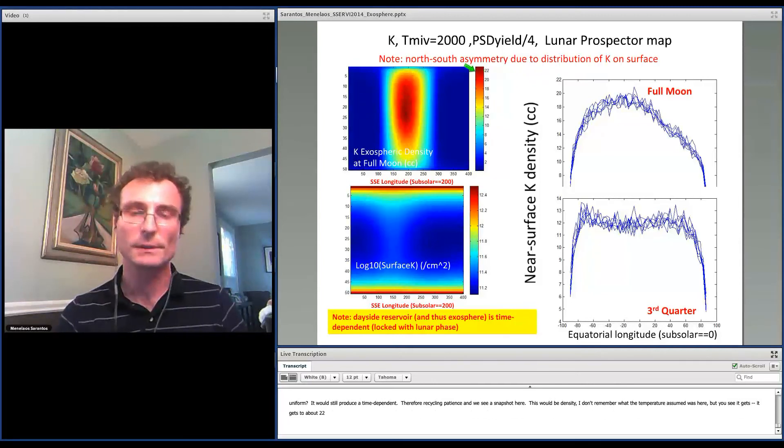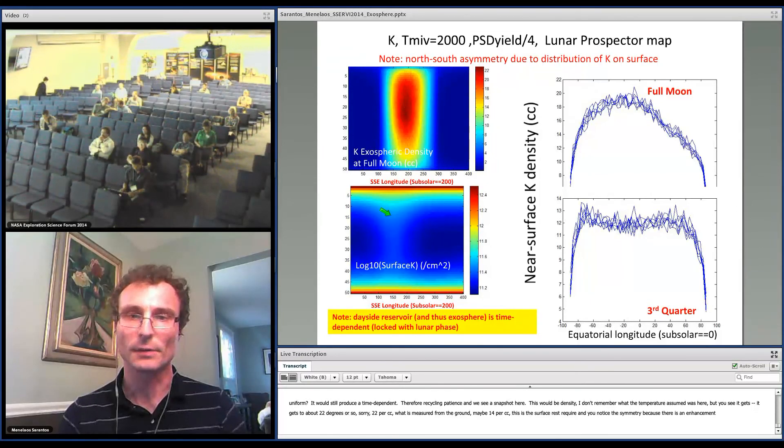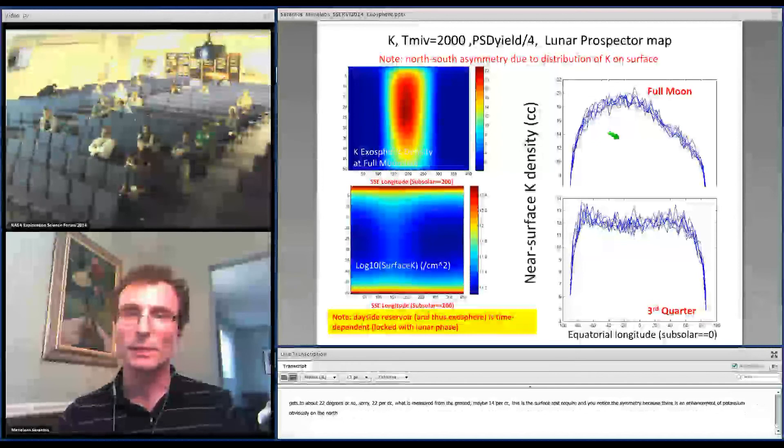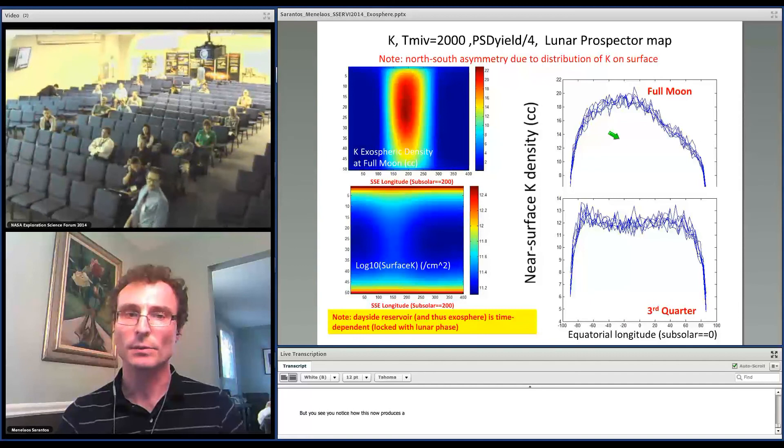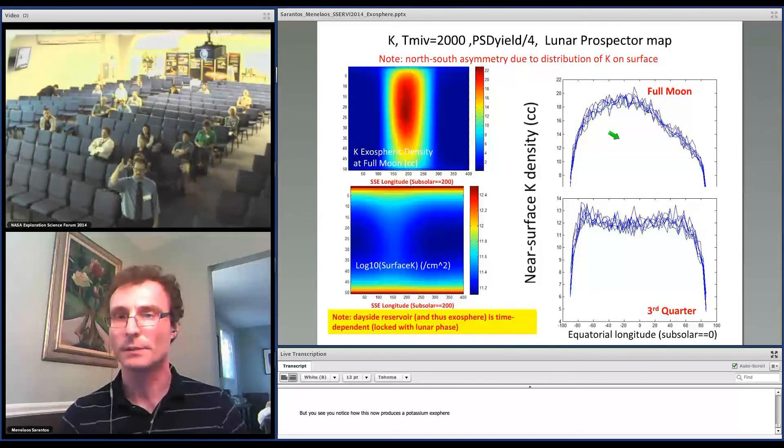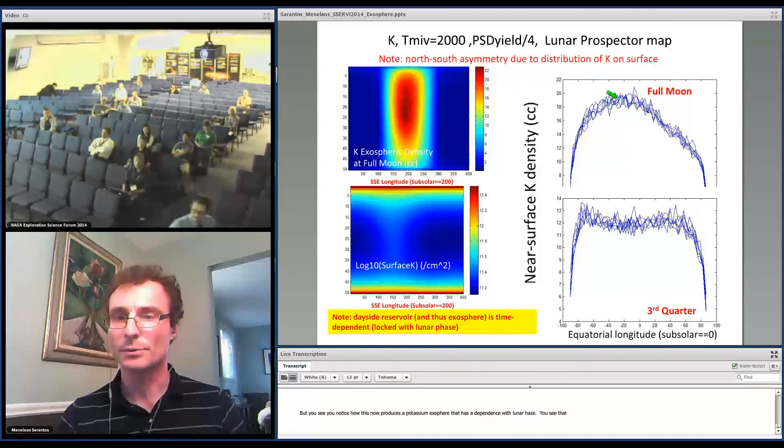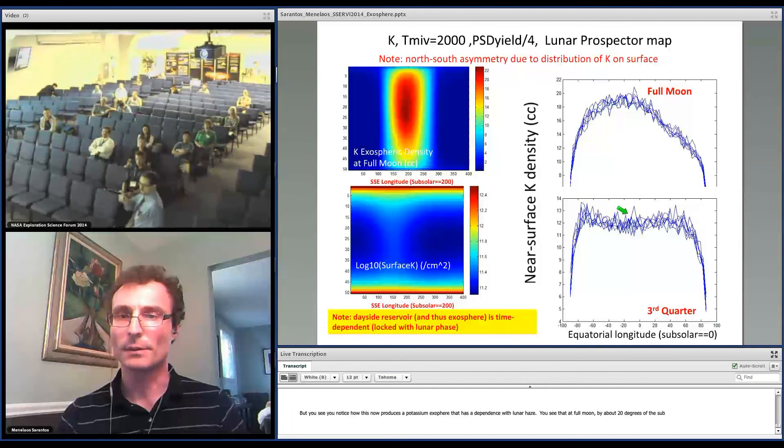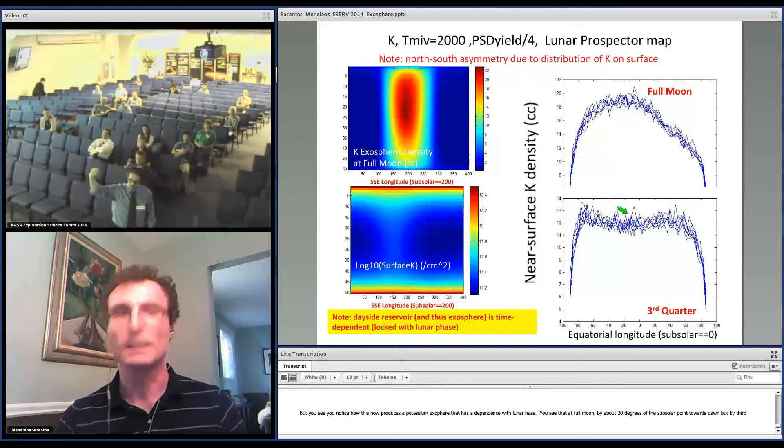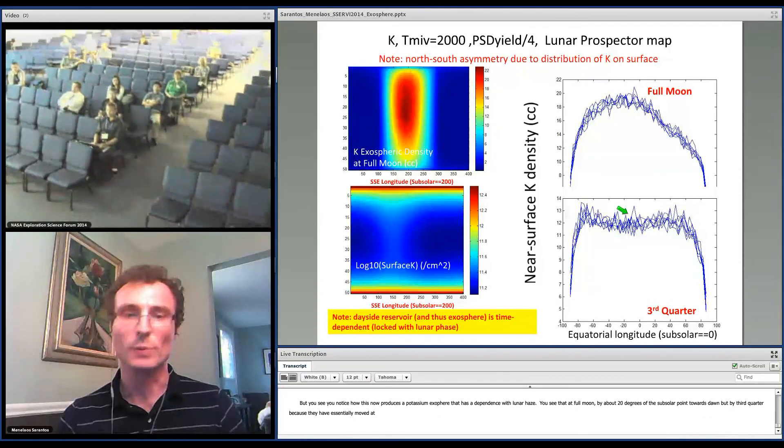This is the surface reservoir, and you notice the north-south asymmetry because there's an enhancement of potassium on the north in the KREEP soils. But you notice how this scheme now produces a potassium exosphere that has a dependence with lunar phase. You see that at full moon, it's shifted by about 20 degrees off the subsolar point towards dawn. But by third quarter, because the KREEP soils have essentially moved at the dusk terminator, you get a double bump.